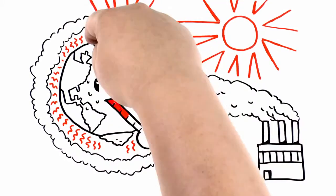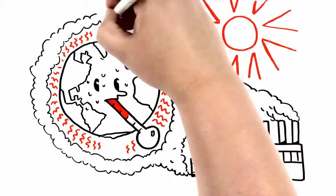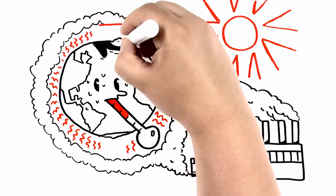And warmer temperatures means, you guessed it, less snow and ice. As they melt, what's left behind are darker patches of land and water.